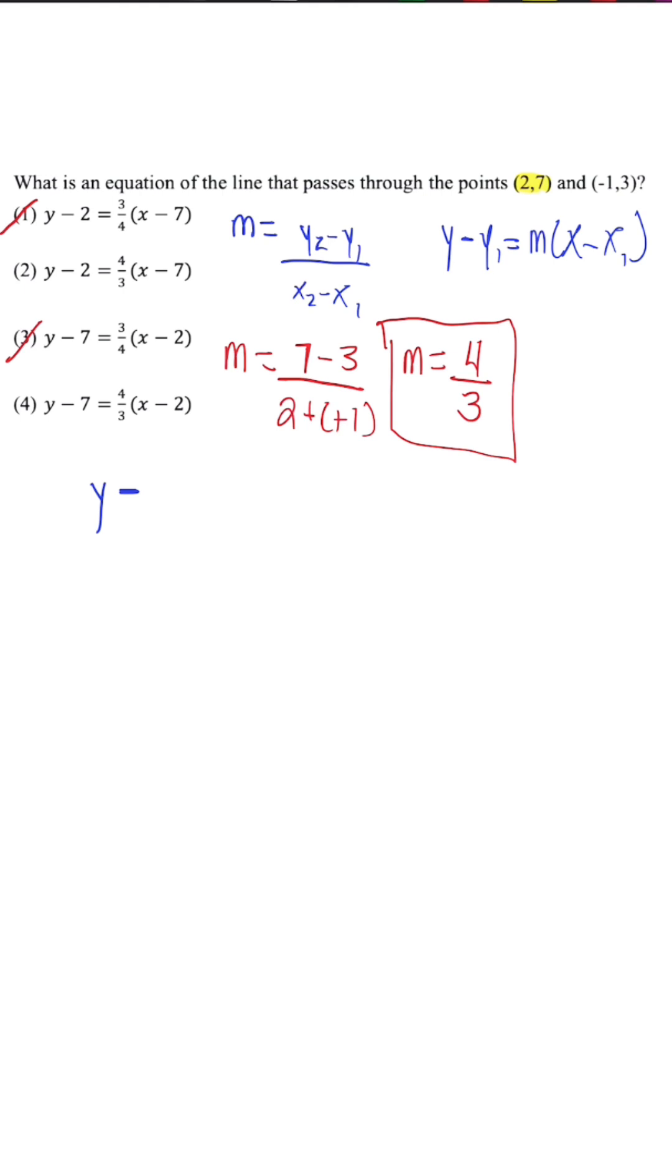So using the point slope formula, we should have y minus the y value, which is 7. And this is equal to our slope 4 over 3 times x minus the x value, which is 2.